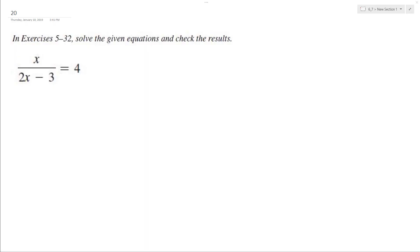Let's solve the following problem for x. We can just cross multiply here. Cross multiplying, we end up with 4 times 2x minus 3 equals 1 times x.